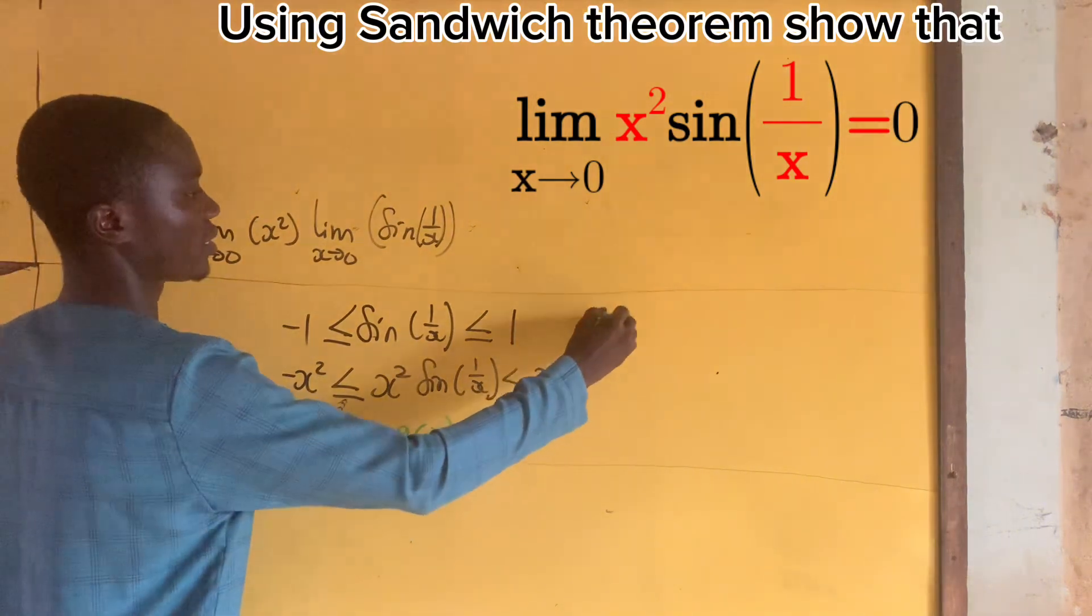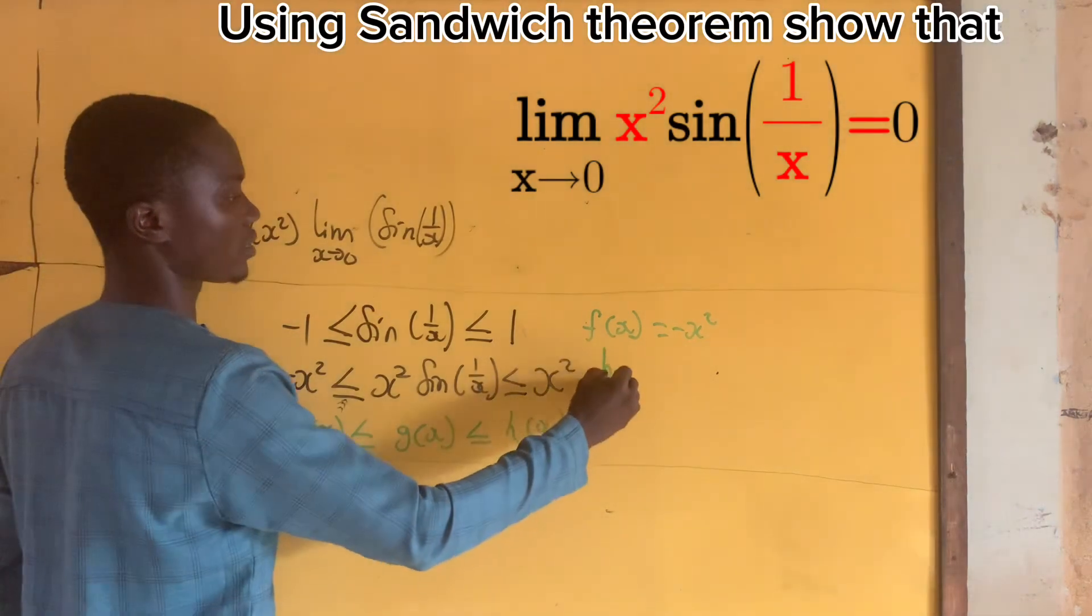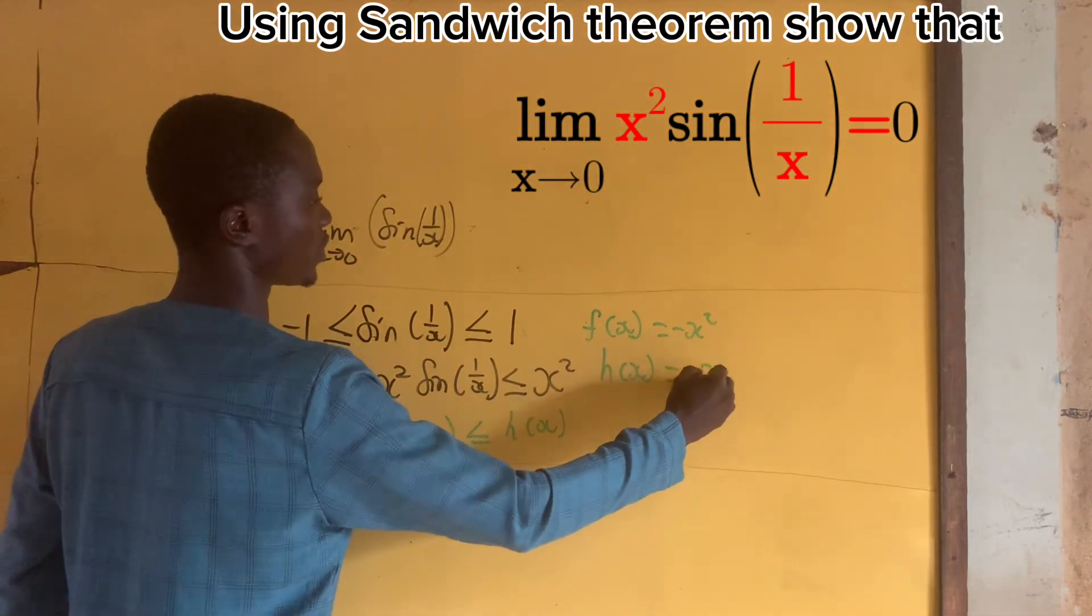Meaning that f(x) equals -x² and h(x) equals positive x².